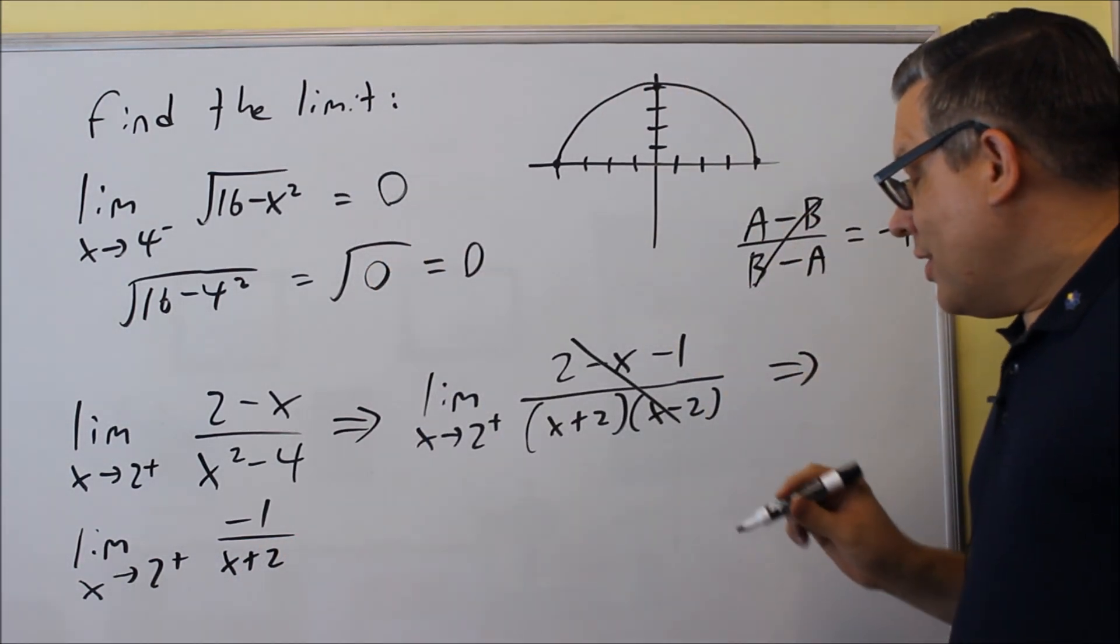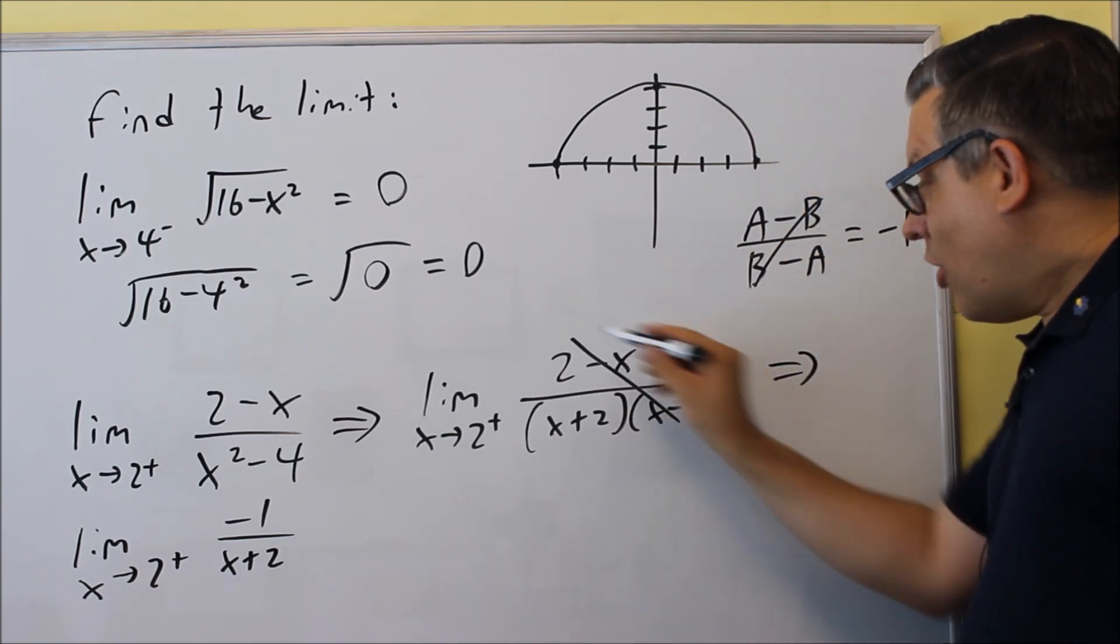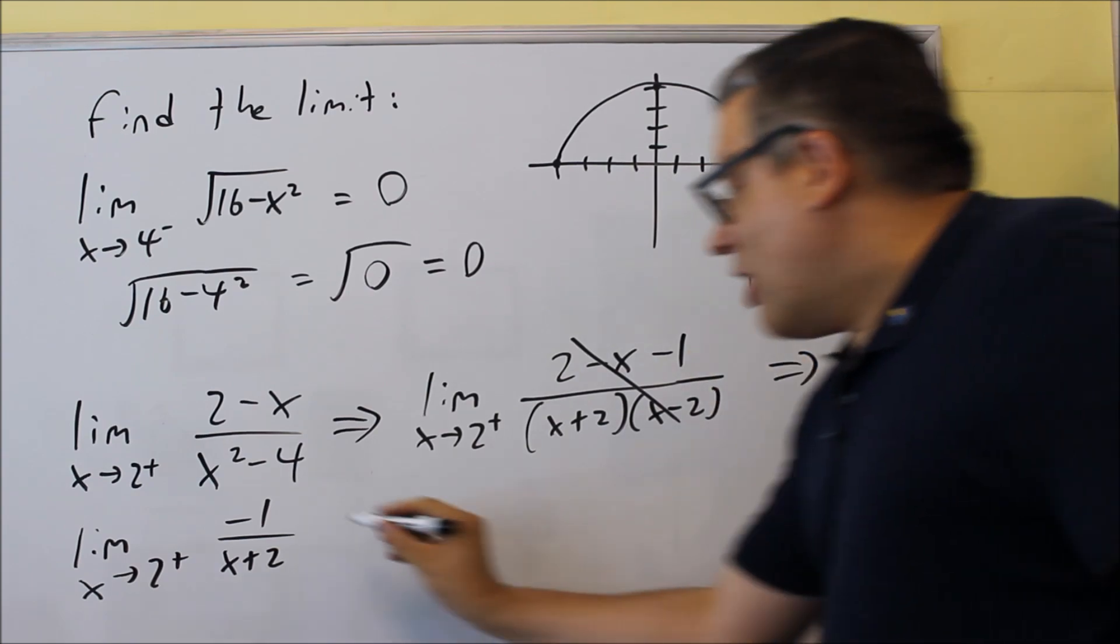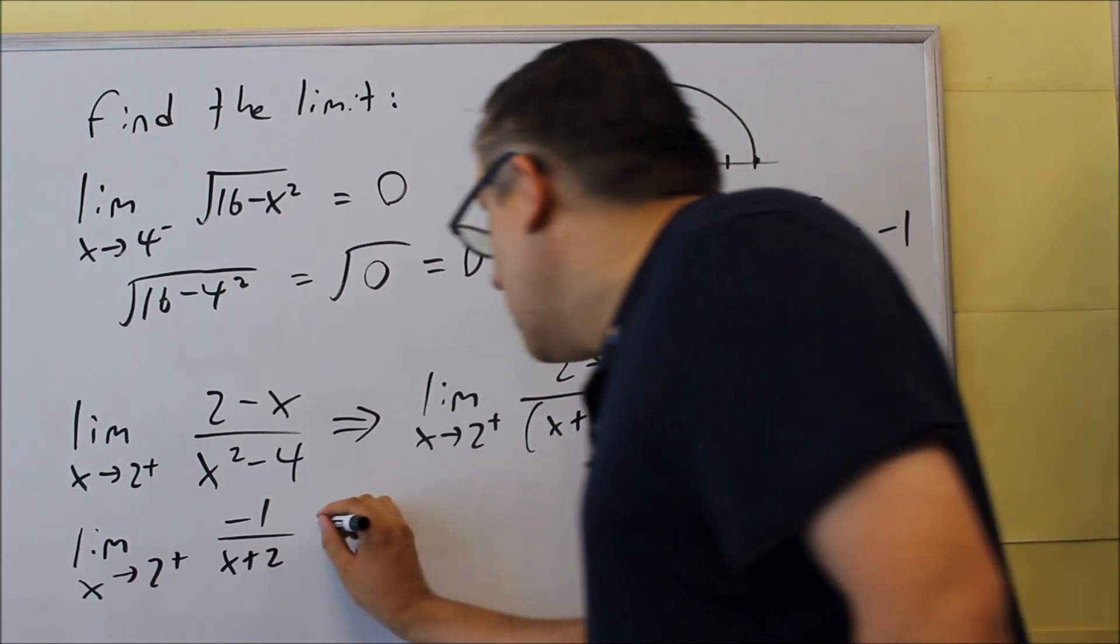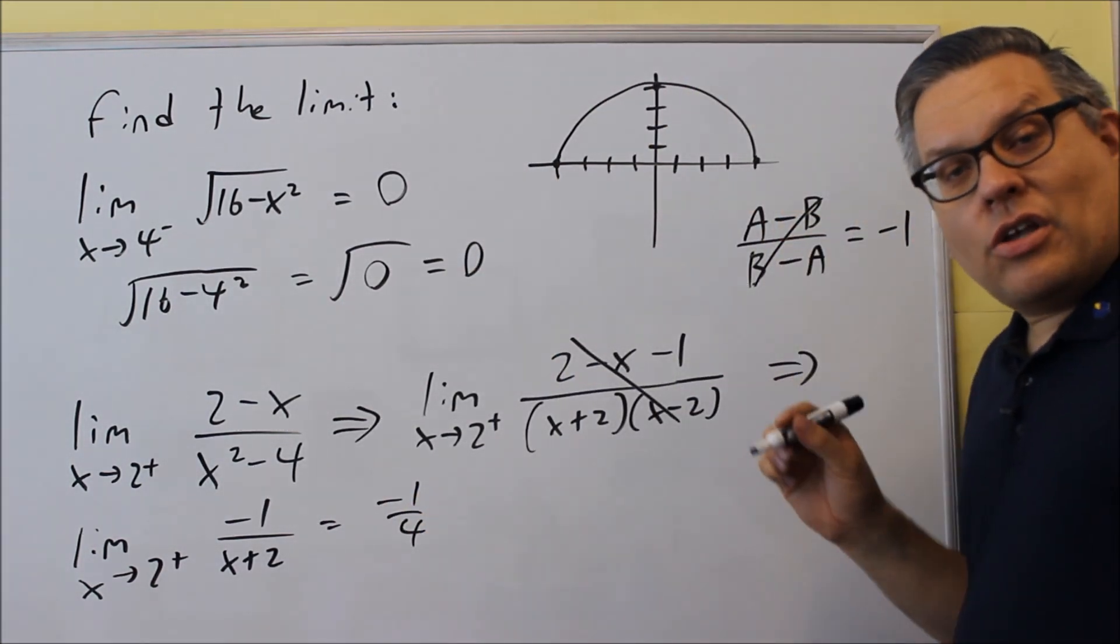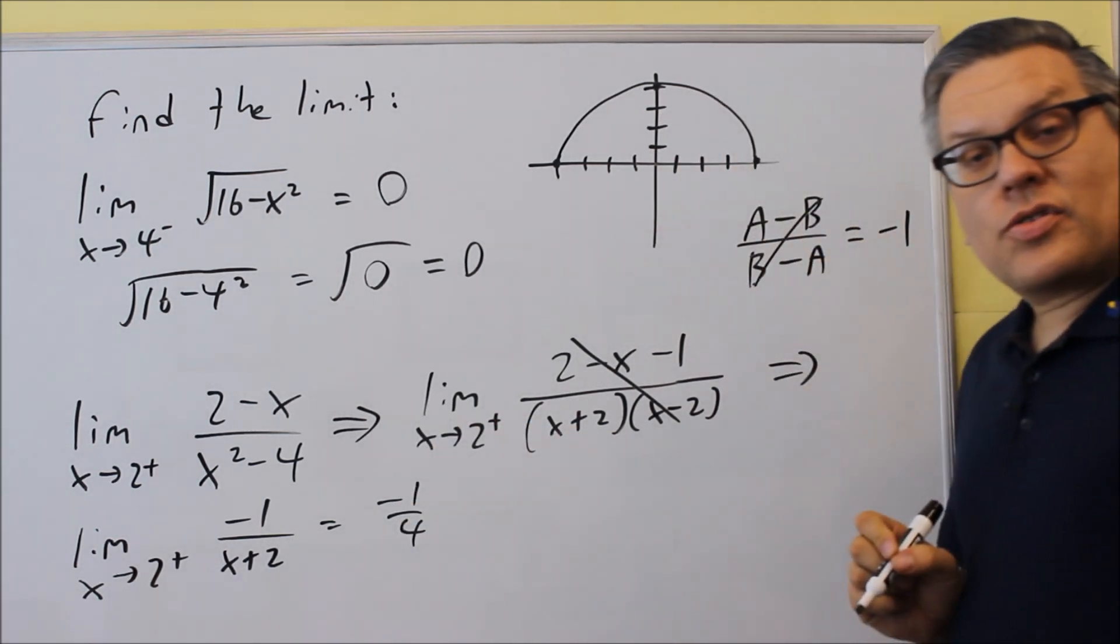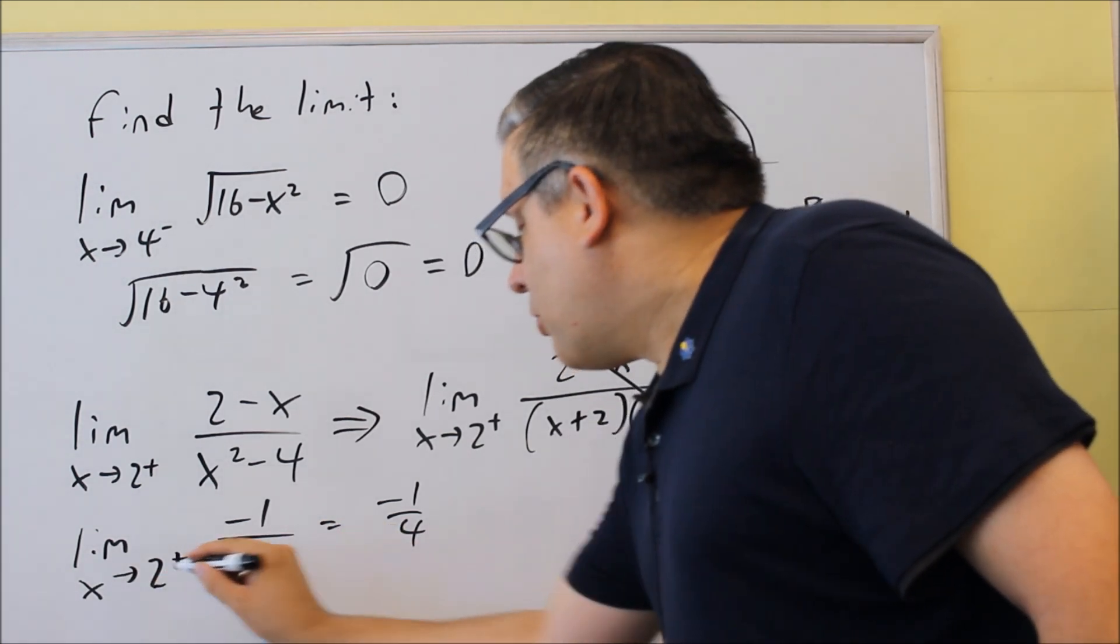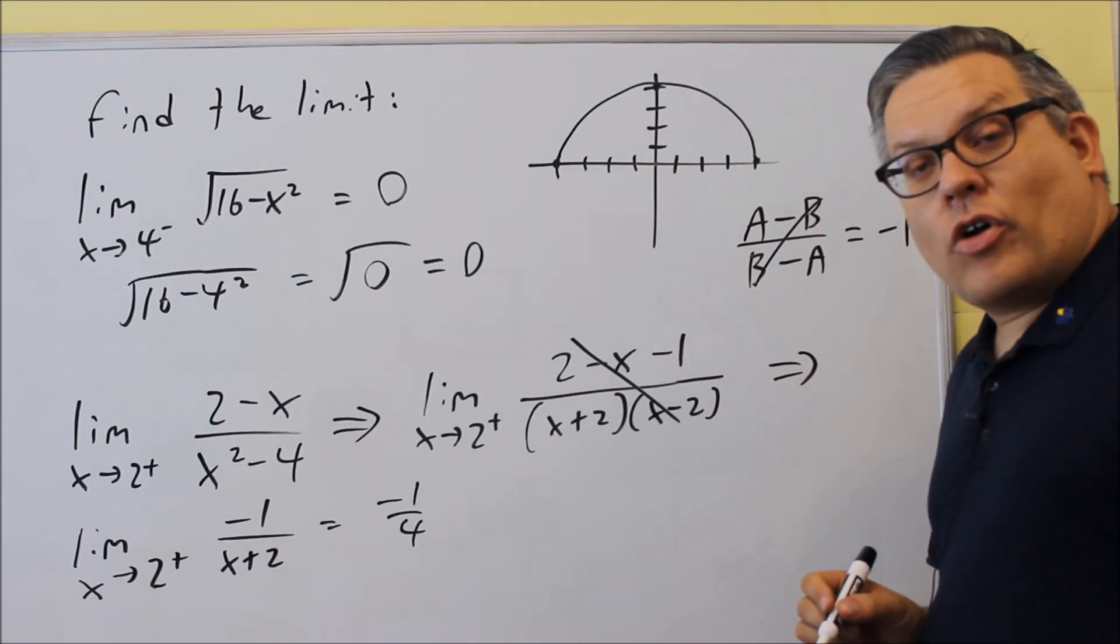So now I've eliminated the one that was the problem. So again, all this gets replaced with negative 1 on top here. And so I get this. If I put a 2 now in the bottom, plug it in directly, then I get negative 1 fourth as the answer. And looking at the graph that was provided, that does look like where that open circle was. The y value. So as the x value here approaches 2 from the positive side, the y value approaches negative 1 fourth.